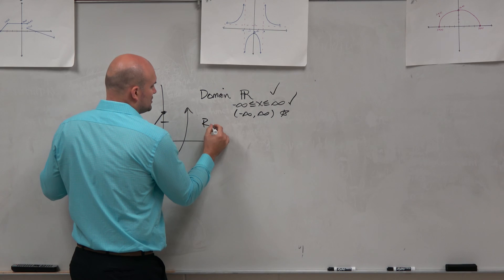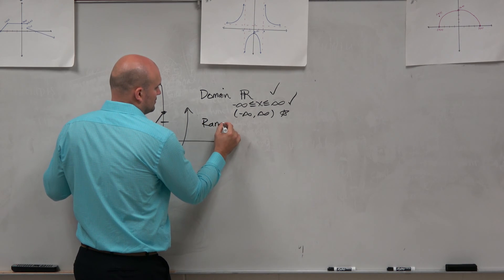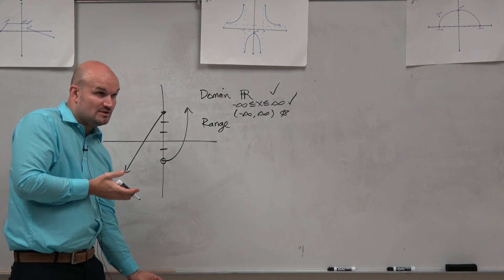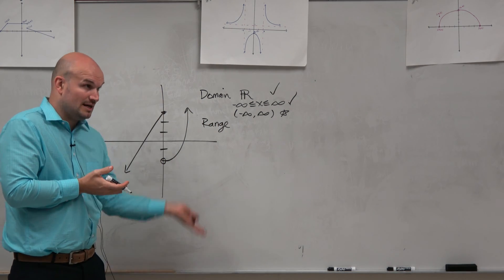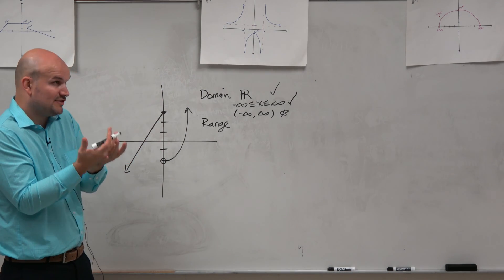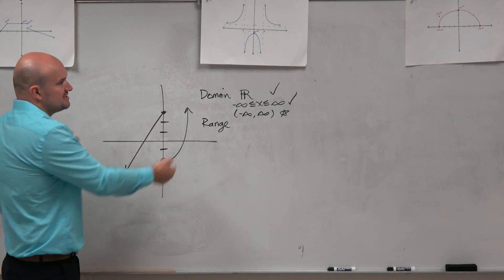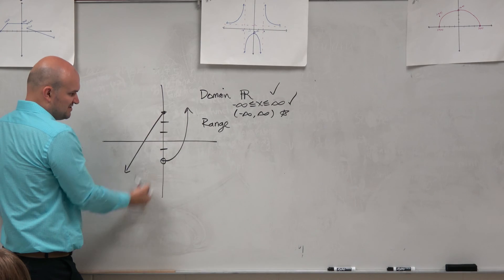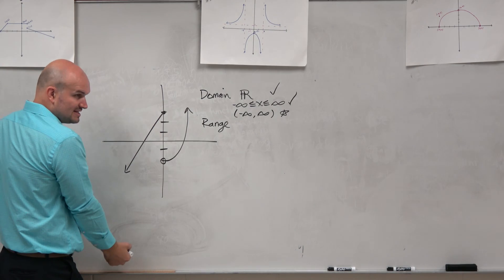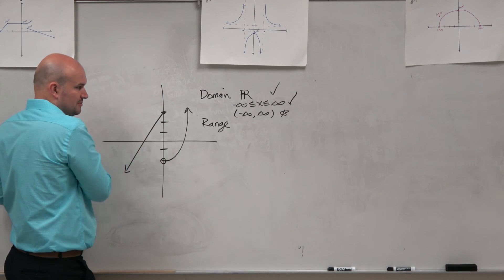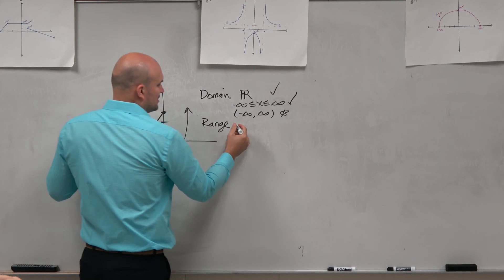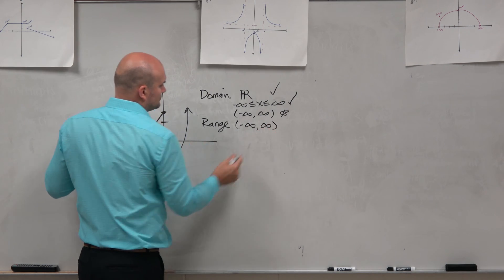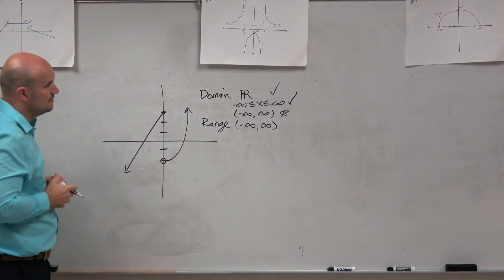The range is basically asking us how low is this graph going to go and how high is it going. The range is talking about the y values instead of the x values as we did for domain. This one's fairly simple — we're going down to negative infinity and then up to infinity. So again, this is going to be the same thing.